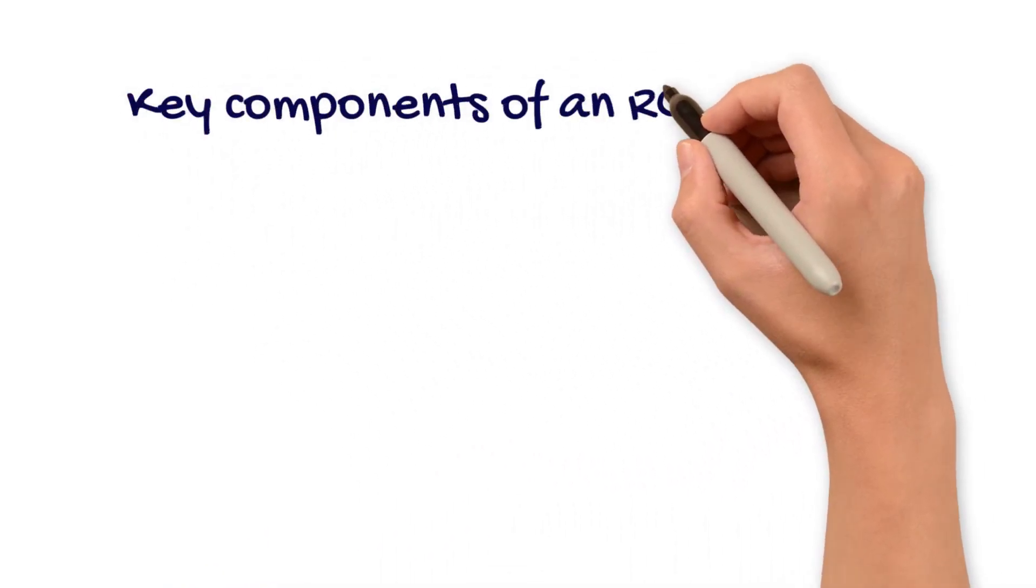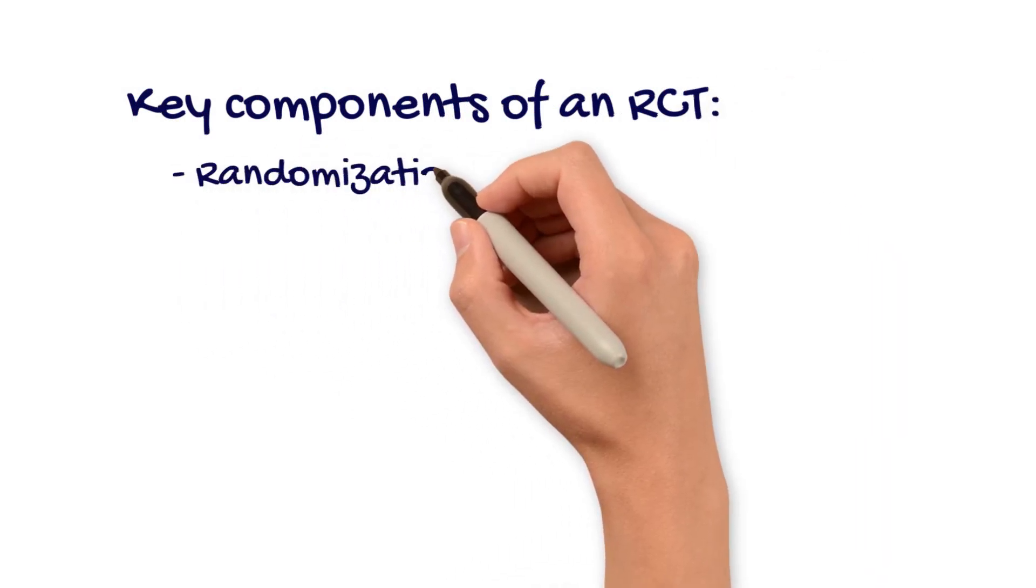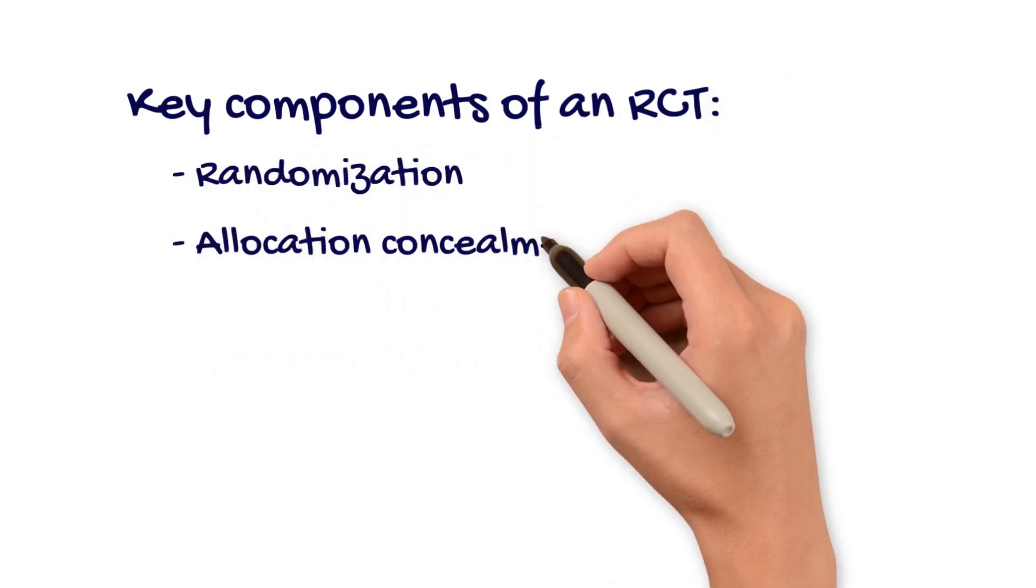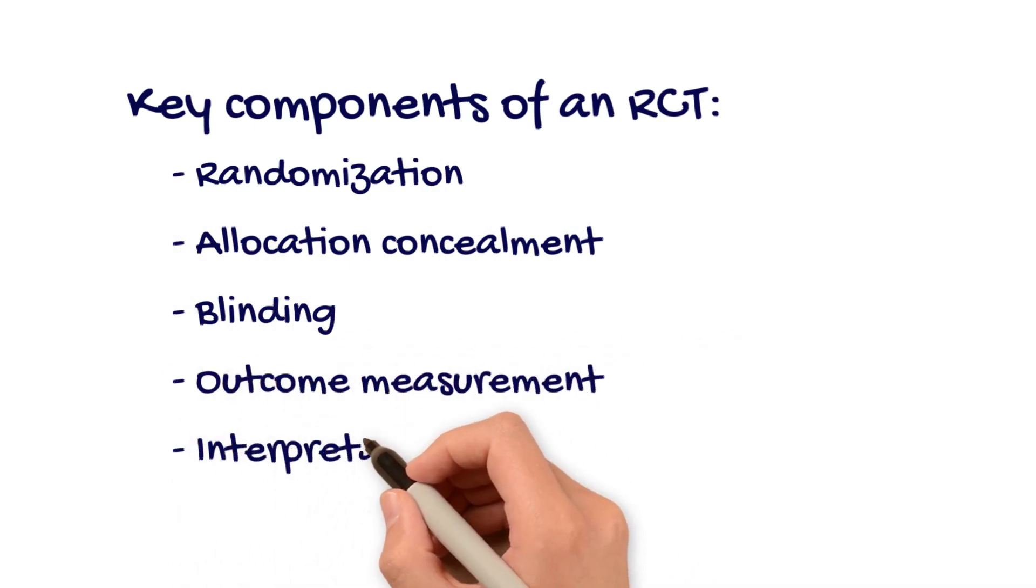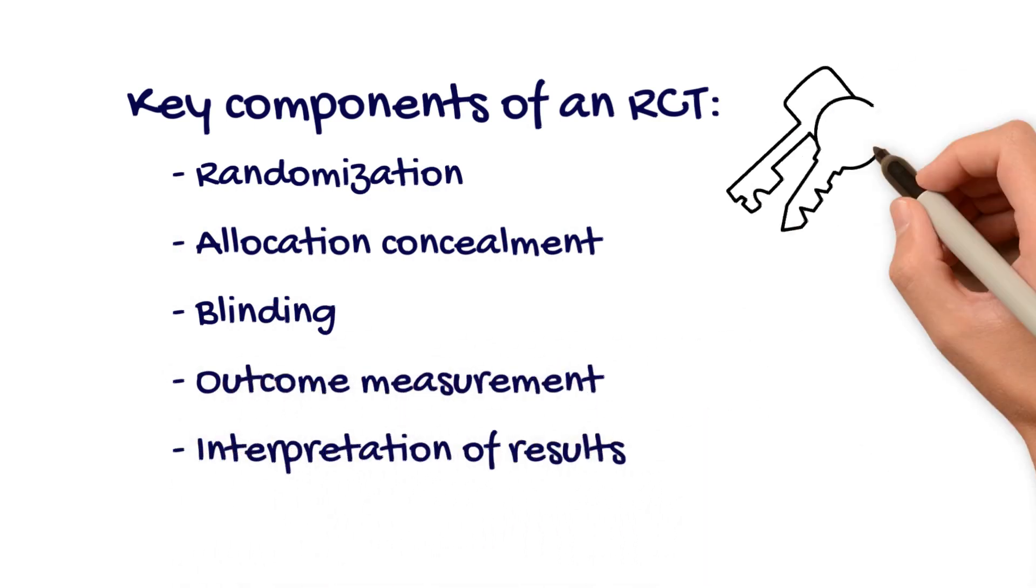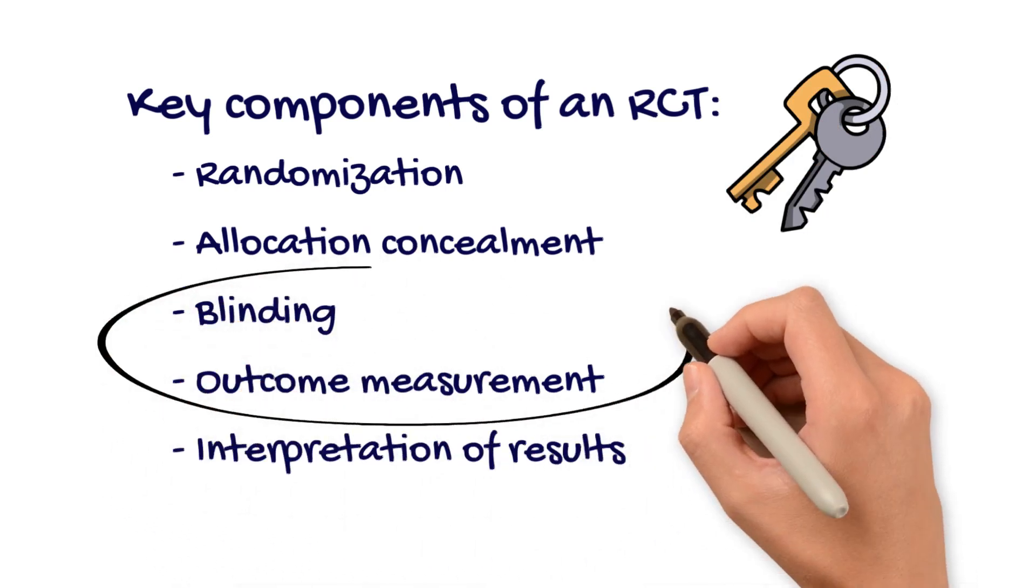As a reminder, the key features of an RCT consist of randomization, allocation concealment, blinding, outcome measurement, and analysis of results. In this video, we will focus on blinding and outcome measurement.